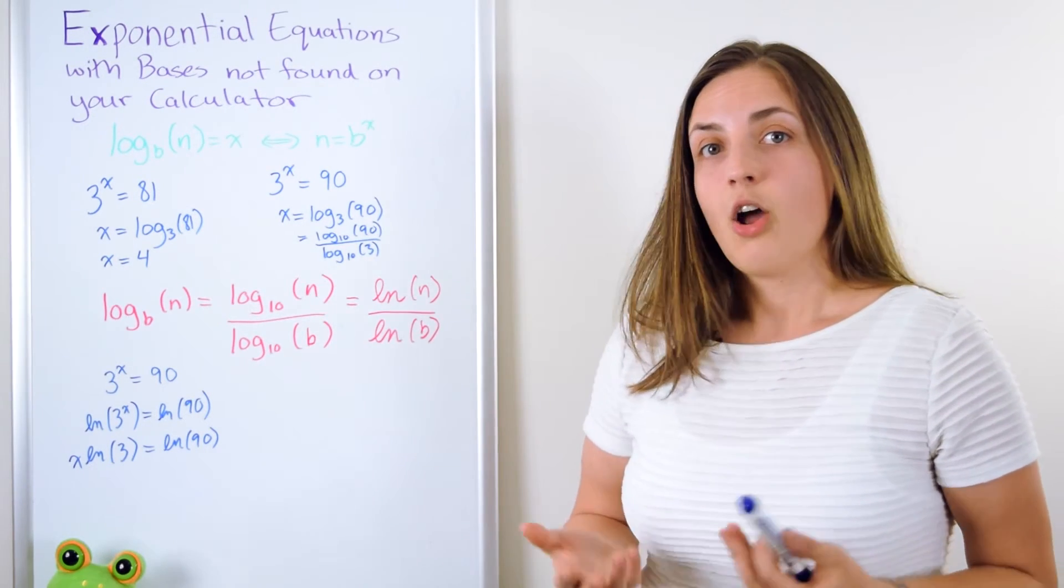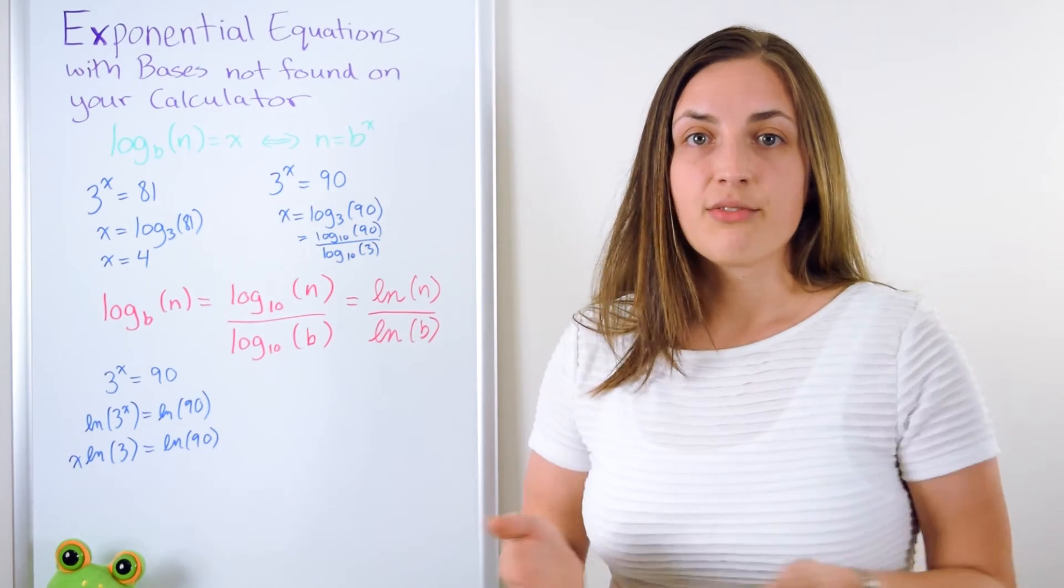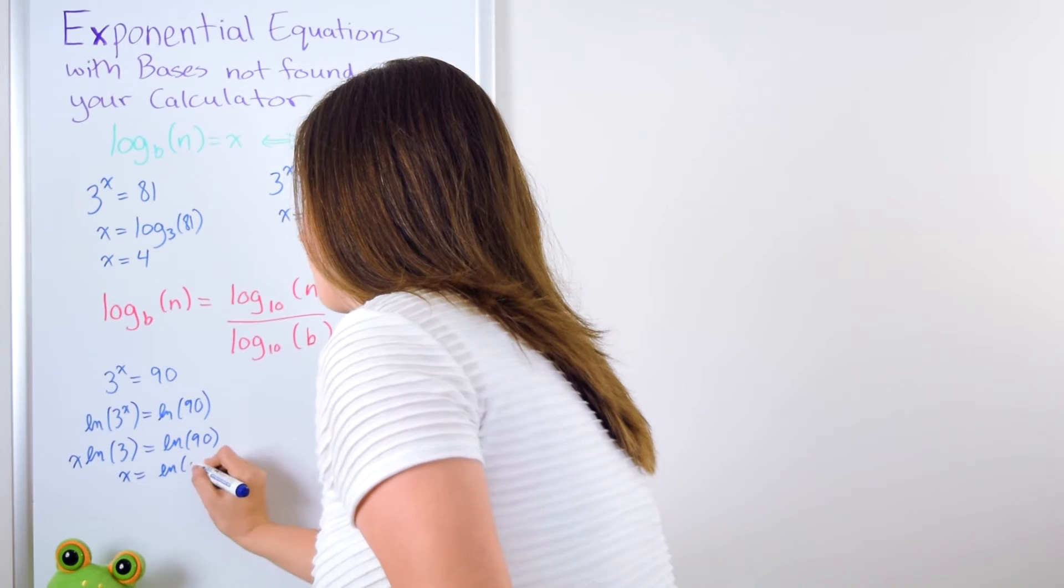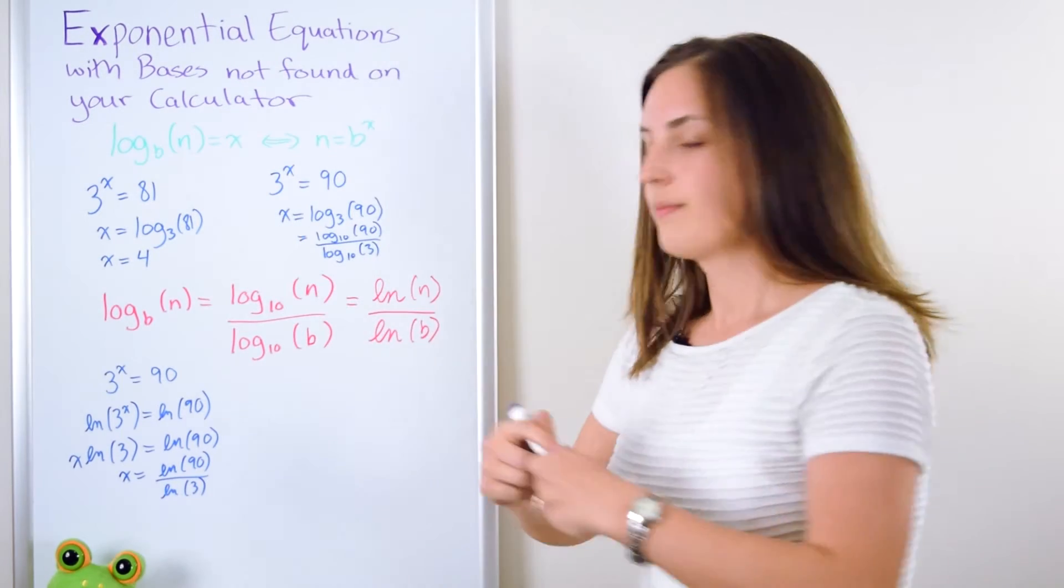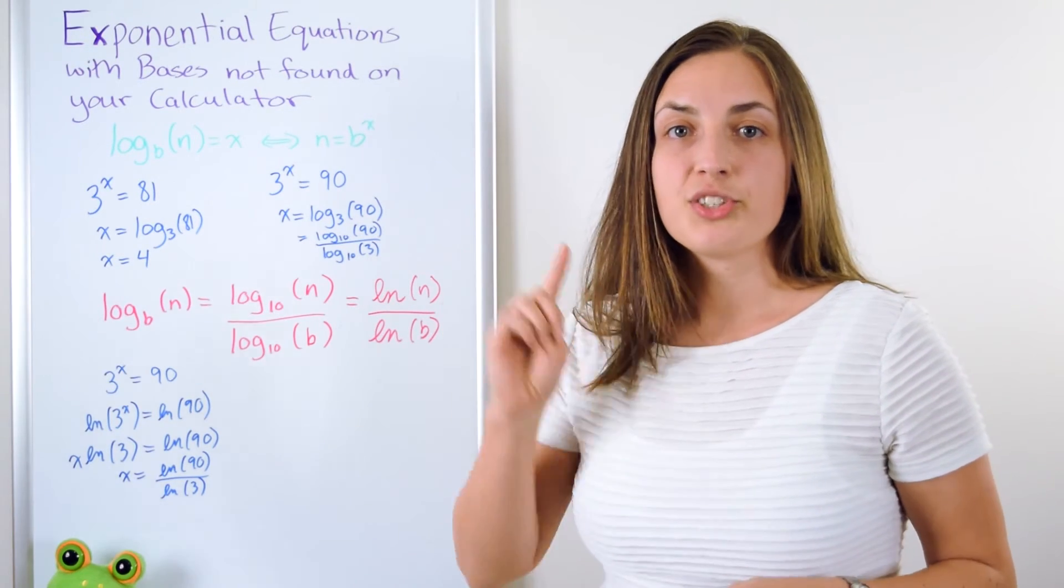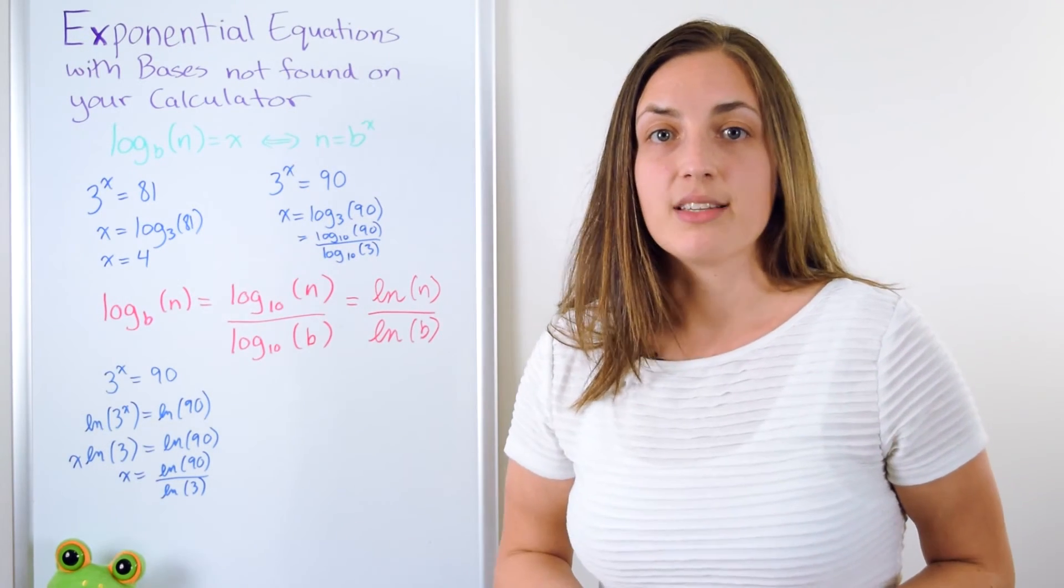Now we're almost done. What is x? All we have to do is divide both sides by the ln of 3. And look at that. We have exactly the same answer that we would have gotten if we had first used the definition and then use the change of base.